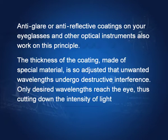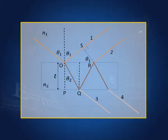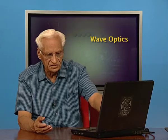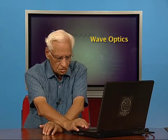Other optical instruments work on the same principle. The thickness of the coating, made of special material, is adjusted so that unwanted wavelengths undergo destructive interference. Only the desired wavelengths reach the eye, thus cutting down the intensity of light. The thickness and n2 are arranged so that only desired waves interfere constructively, while other waves interfere destructively and are eliminated.